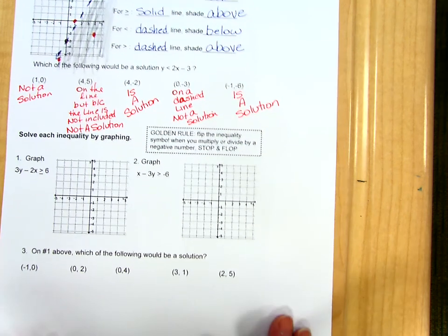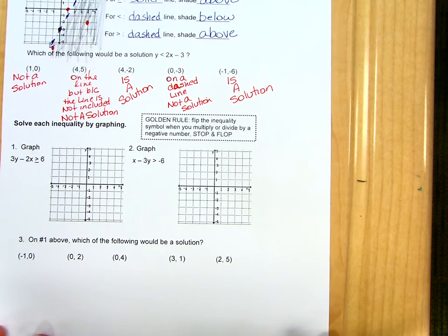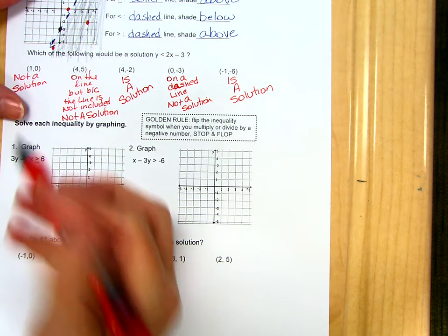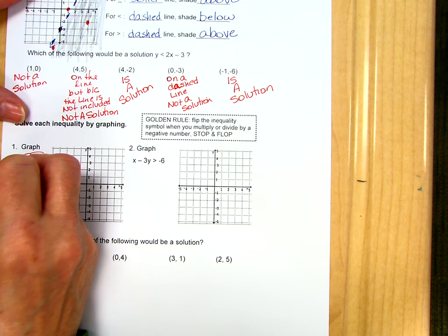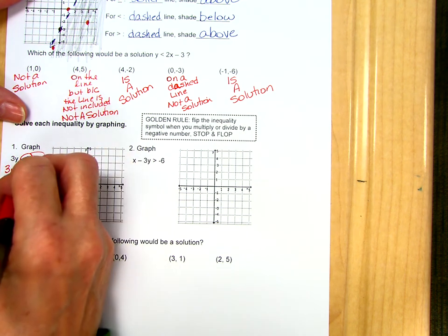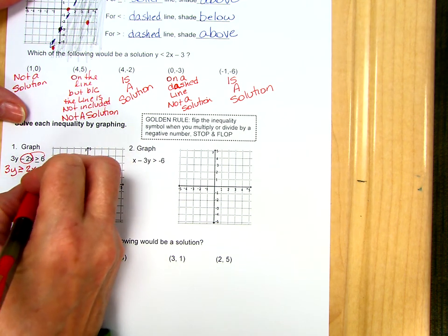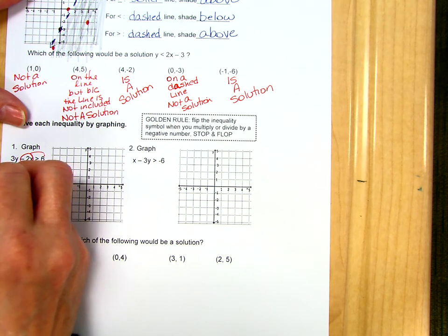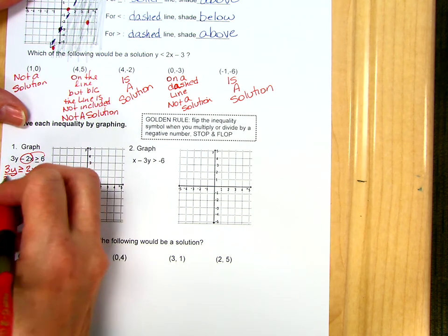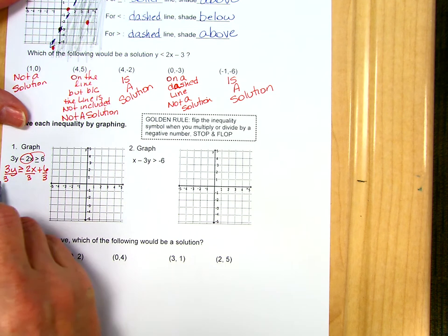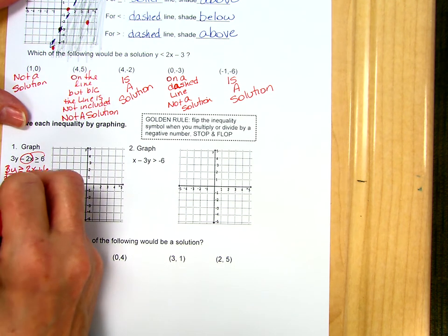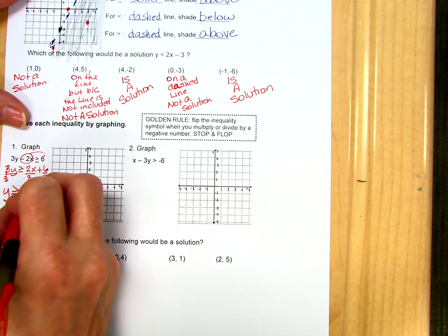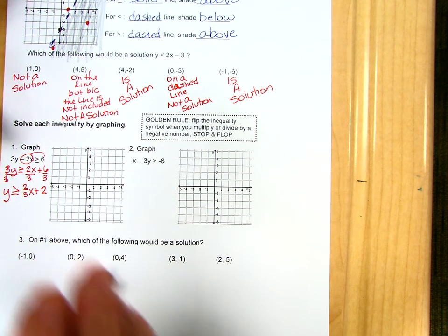Okay, so down here at the bottom we have two more examples. In the first example, we're going to need to solve for y. So remember, we move the x, change the sign. So this is 3y is greater than or equal to 2x plus 6. Then we're going to divide both sides by the number in front of the y, and then we're going to simplify. Now we did not divide by a negative here, so the inequality symbol stays the same. So we have a greater than or equal to. Our slope is 2 thirds and our y-intercept is 2.